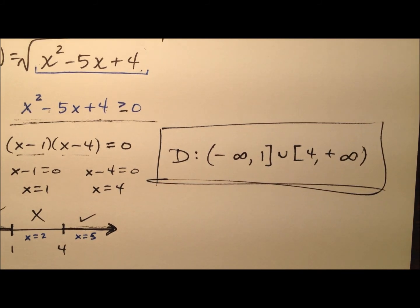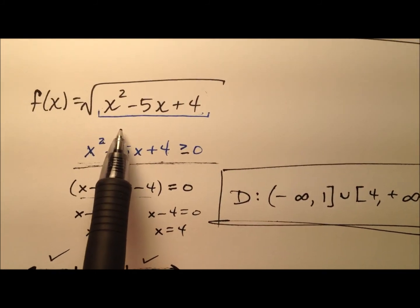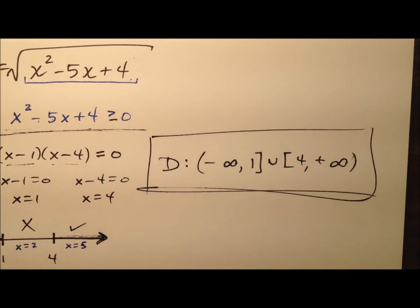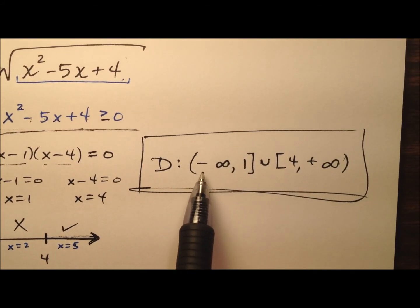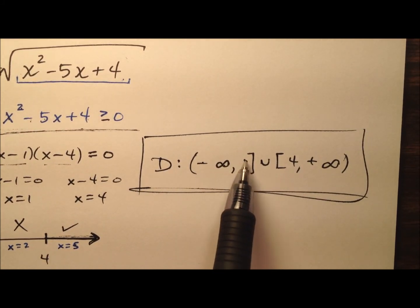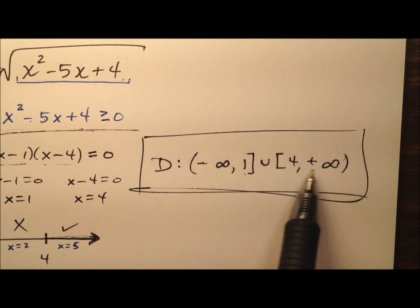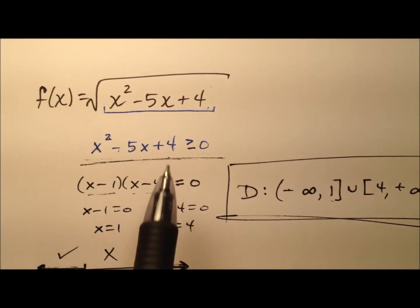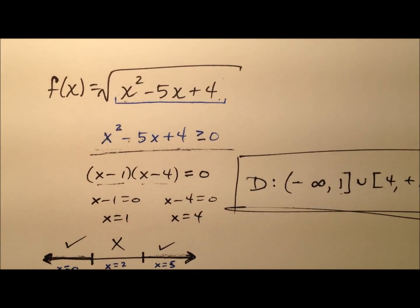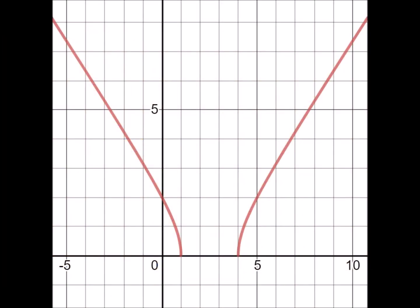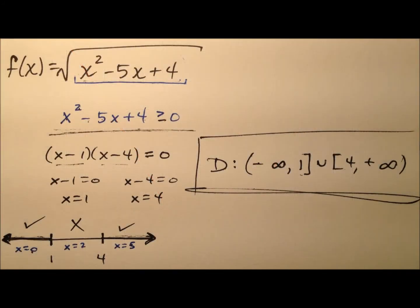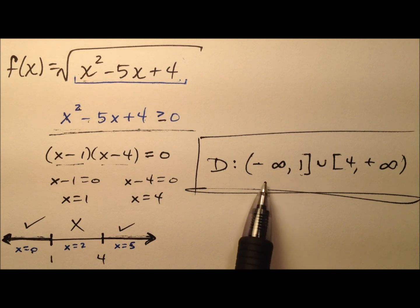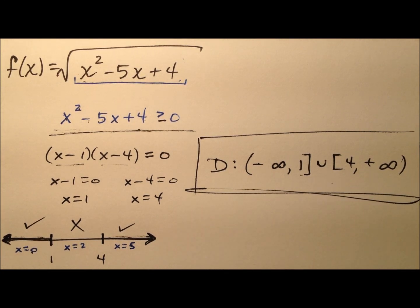This will be the domain of our function here, and we've written it in interval notation. We're saying all x values from negative infinity to 1, including 1, as well as all x values from 4, including 4, up to positive infinity, will be in the domain of this function. Let's go ahead and take a look at the graph. Taking a look at the graph, the x values being used are indeed here in this domain.